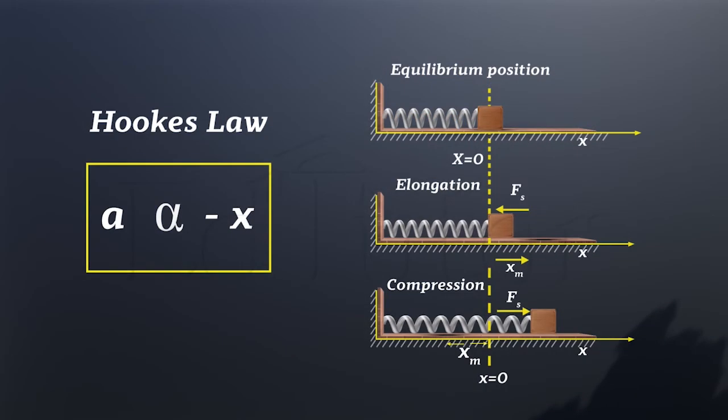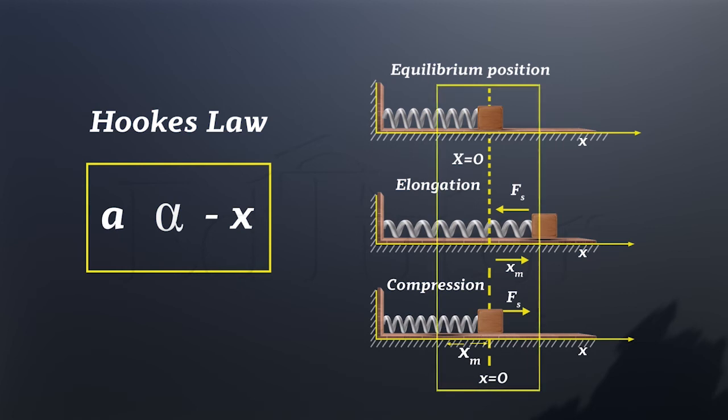This means the acceleration of the mass is directly proportional to its displacement from the mean position. The negative sign indicates that the acceleration is always directed opposite to the displacement, toward the mean position.